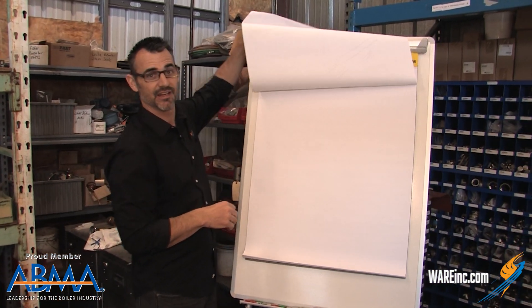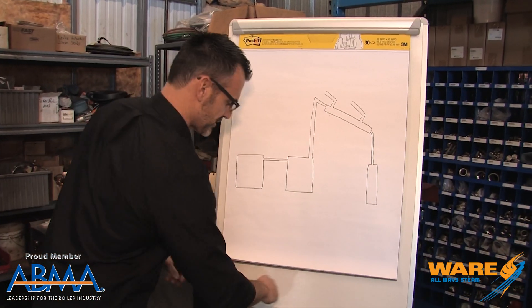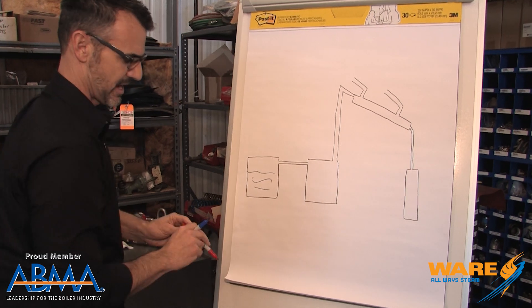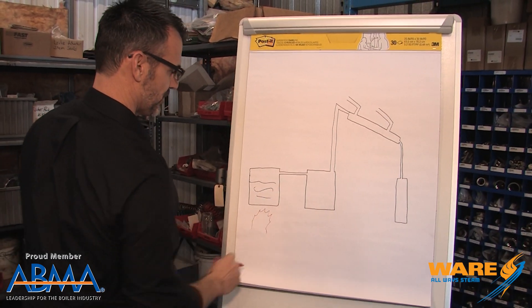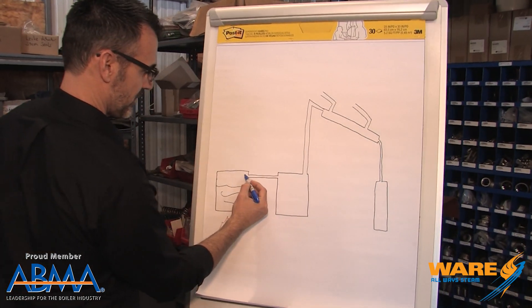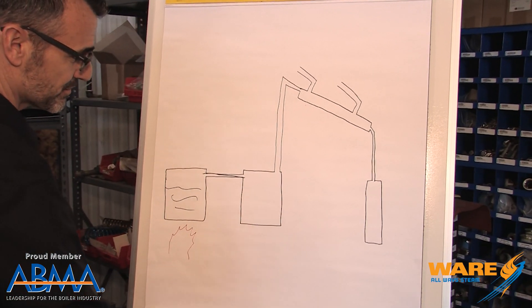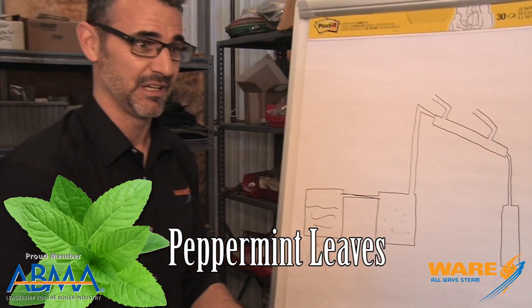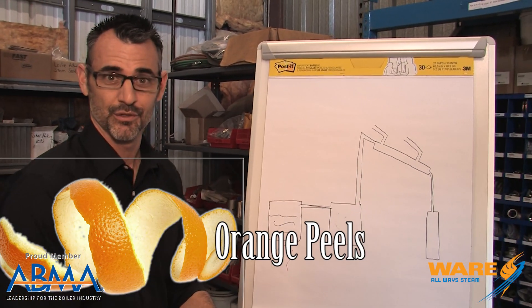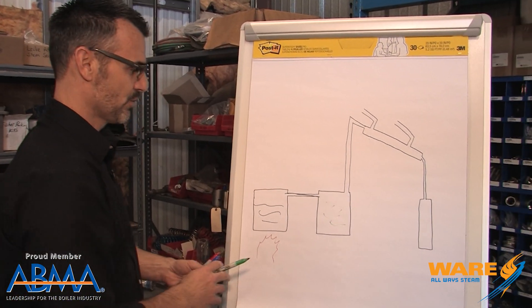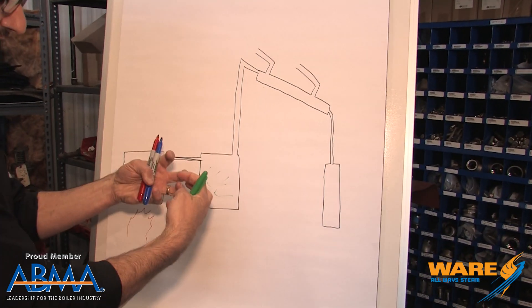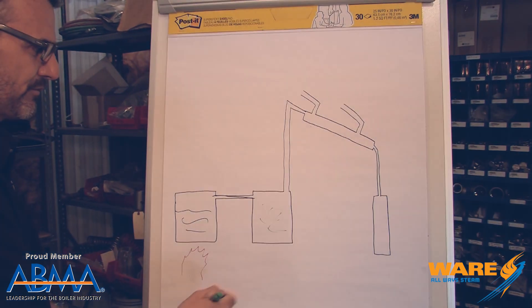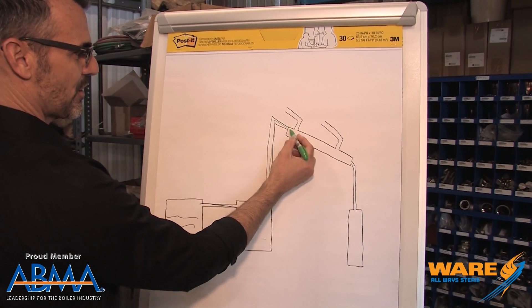This is what steam distillation looks like in its simplest process. In the first case we have a flask that has a bunch of water with a fire and we're making steam. That steam is going to travel to a flask right here that contains some kind of botanical material — it could be peppermint leaves, lavender leaves, or orange peel which is very popular for cleaning supplies. The steam is going to boil and extract the oil, and along with water vapor the essential oil is going to travel up this line into something called the condenser tube.